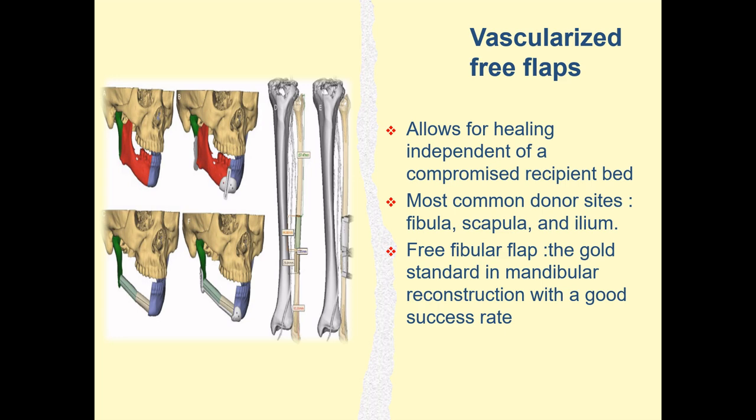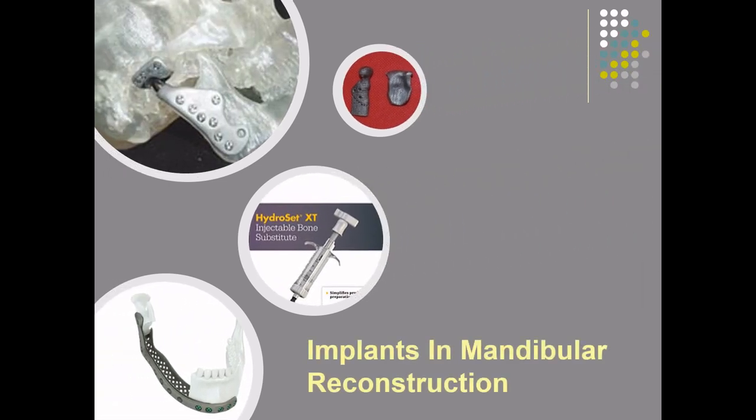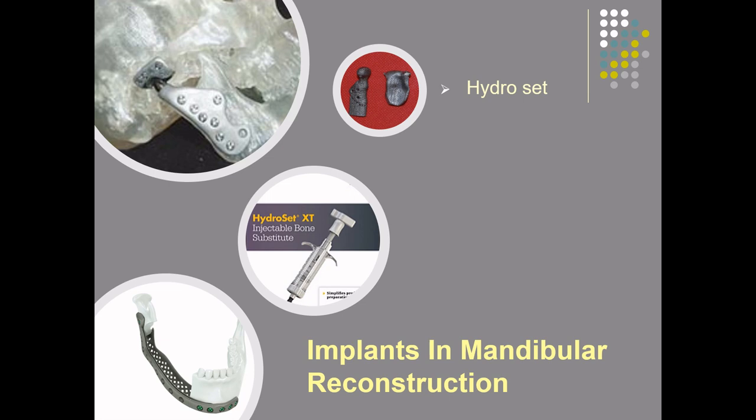The fibula matches the jaws with its length and structure, allowing reconstruction of both the maxilla and mandible after extensive bone resection. It can also be harvested as a single flap, permitting bulk replacement of bone and soft tissue. Currently, a variety of implantable materials are available to aid in mandibular reconstruction. The most commonly used is Hydroset, a calcium phosphate cement that converts in situ into hydroxyapatite, serving as an effective osteoconductive and osteointegrative material. Other options include customized 3D-printed implants consisting of 75% methyl methacrylate styrene co-polymer.